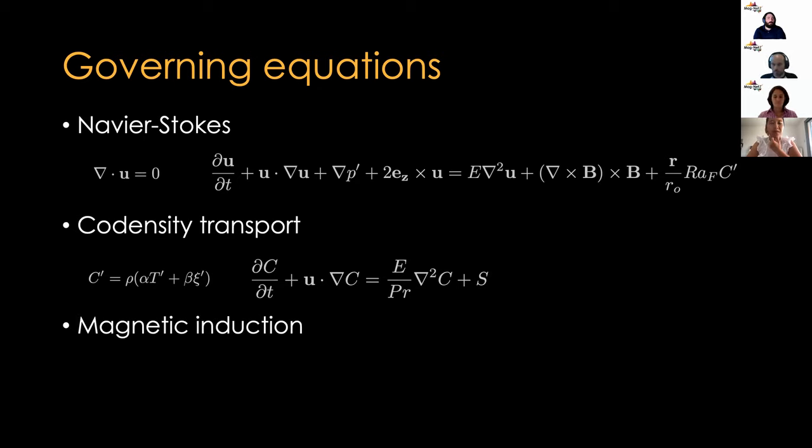And then, finally, we have a magnetic induction equation. So, this means that we have no magnetic monopoles. And this is basically describing how the magnetic field changes over time due to the electromotive force. So, there's a feedback between the fluid flow and the magnetic field, which is incorporated into this force. And this includes things like advection of the magnetic field and magnetic stretching by the flow. And this is the diffusion term.